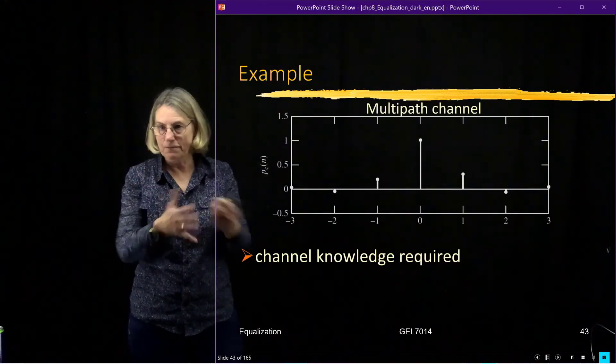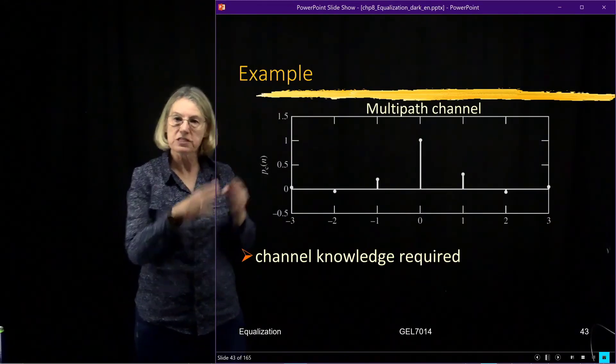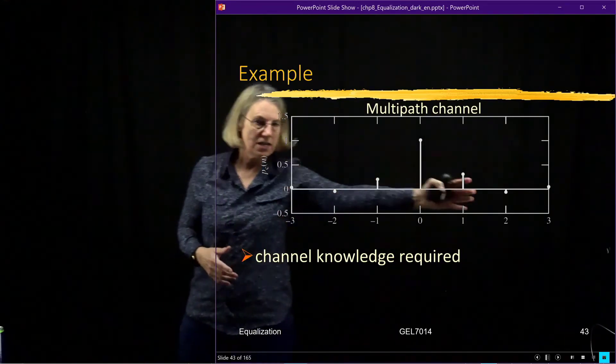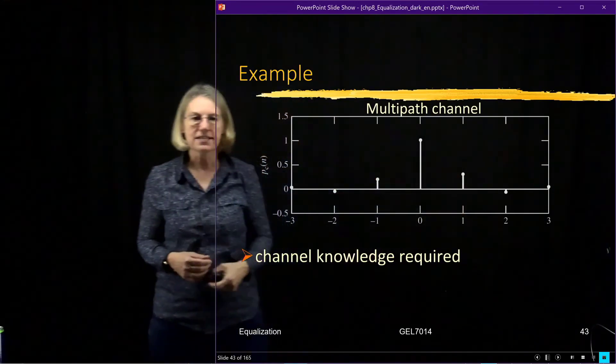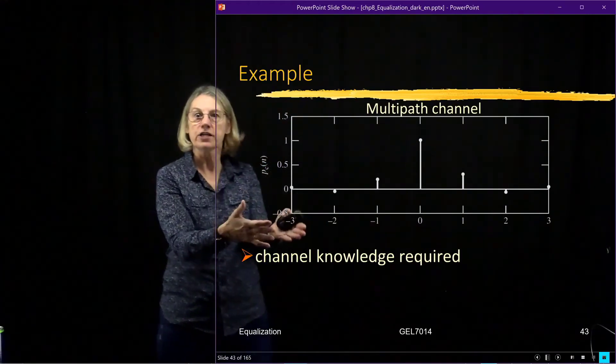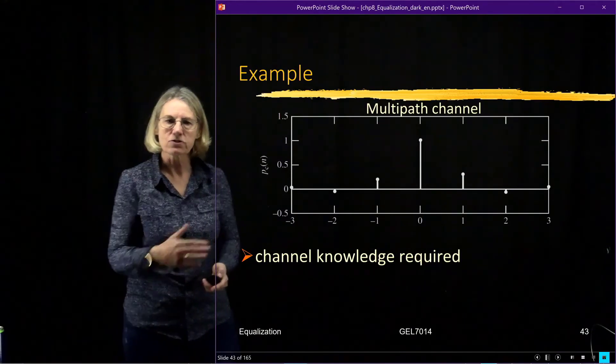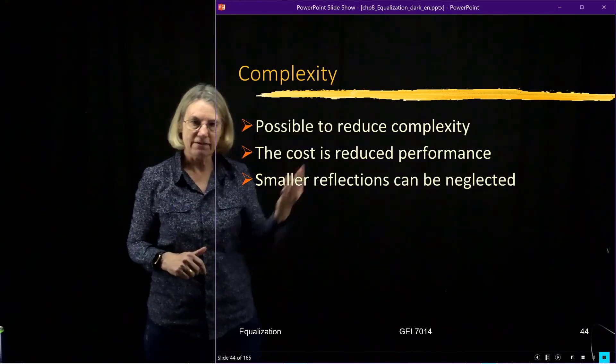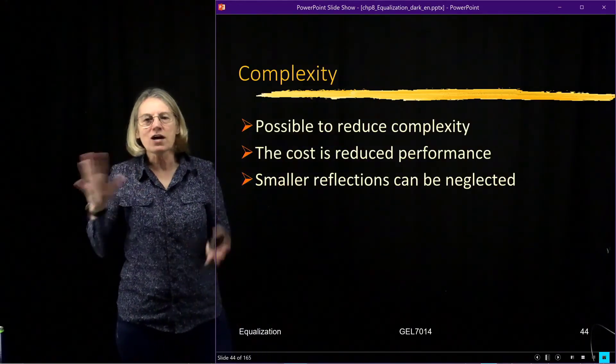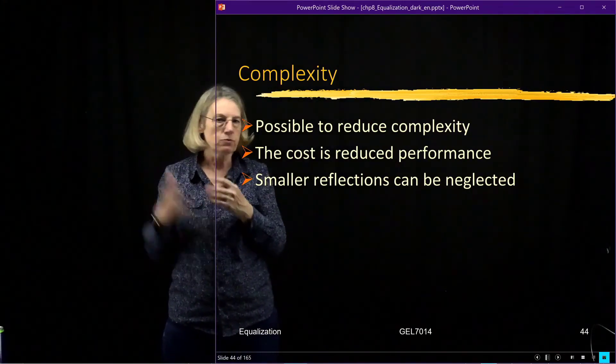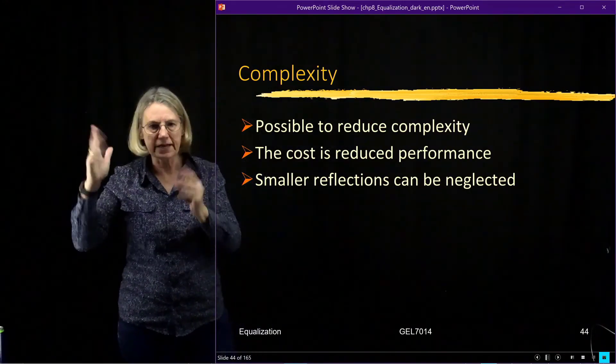Let's take an example. So let's look at this particular multipath channel. In this case, I have seven components, which I've listed here. This is the channel knowledge that is required to do this equalizer, the zero-forcing equalizer. So this is a plot of it. Now, let's just talk about complexity for the zero-forcing equalizer. What is the complexity of it?